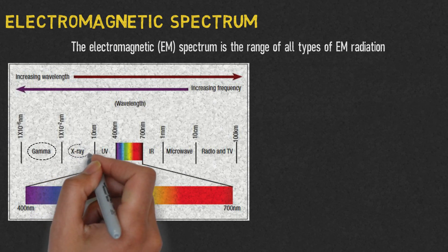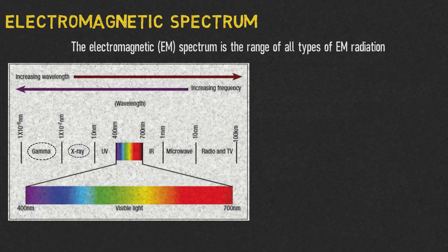X-rays: 10 to the minus 2 nanometers to 10 nanometers. UV rays: 10 nanometers to 400 nanometers.